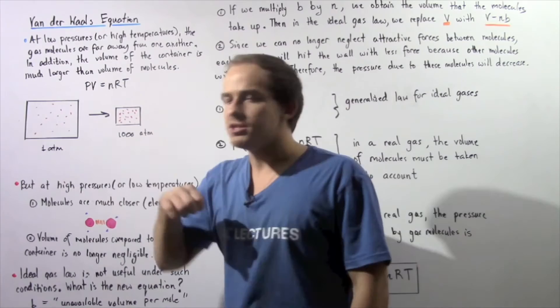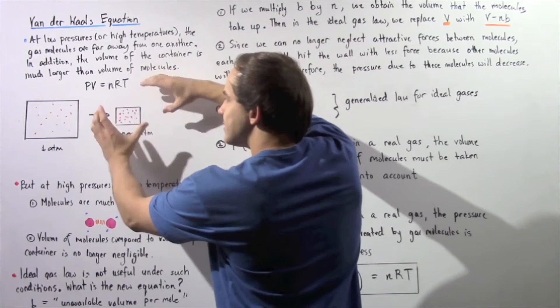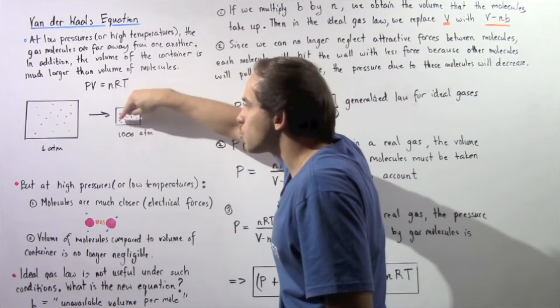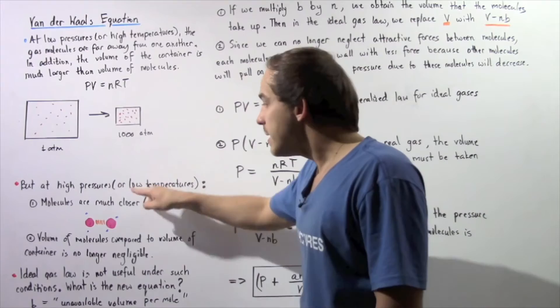Deviation number two: the volume of the molecules is no longer negligible. When the pressure is increased, the volume decreases, and the volume that the gas molecules take up is no longer negligible compared to the volume of the entire container.